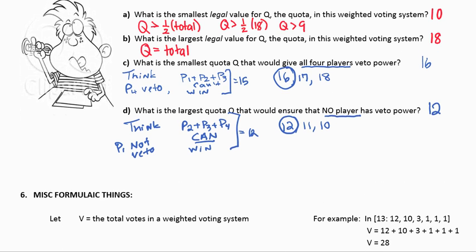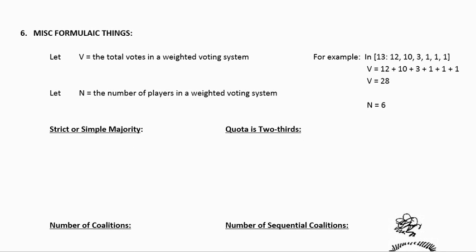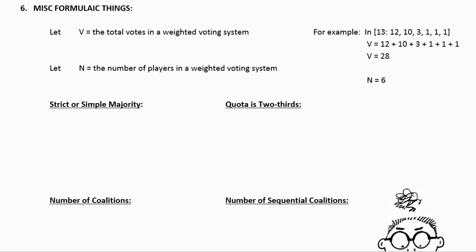A couple other things that we talked about in this chapter, just some miscellaneous formulas. A lot of times we let V represent the total number of votes in a weighted voting system. So if I had [13, 12, 10, 3, 1, 1, 1], you'll be asked how many votes were in this weighted voting system. And you would combine all of the numbers except for the quota. You need to leave the quota alone. The quota tells you the minimum number of votes. Putting the rest of those guys together would give you the total. So add everything up except the quota. That gives me a total number of votes is 28. The number of players represents how many numbers are actually after that quota. So the quota, and then player 1, player 2, player 3, player 4, player 5, player 6.